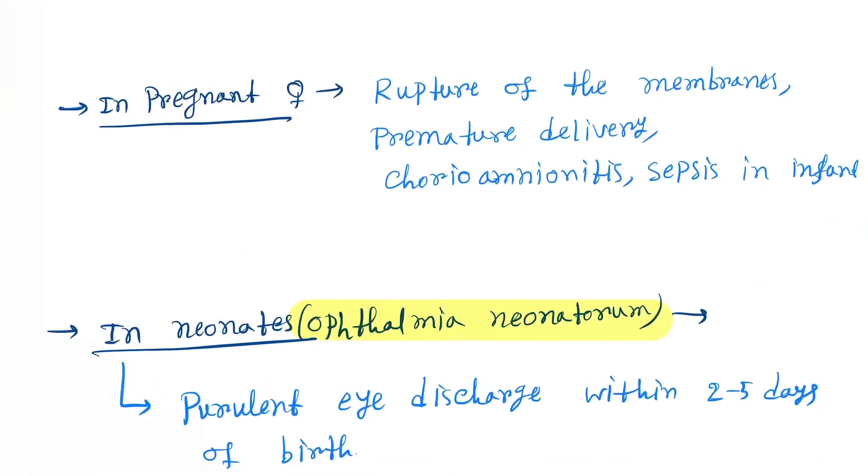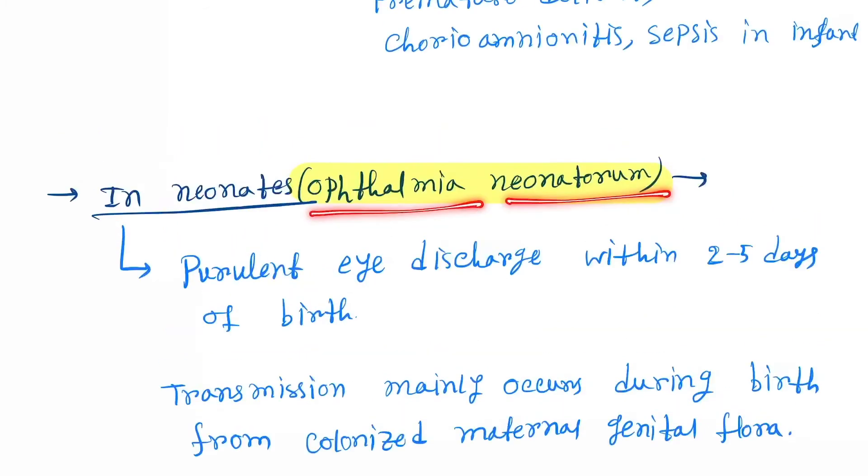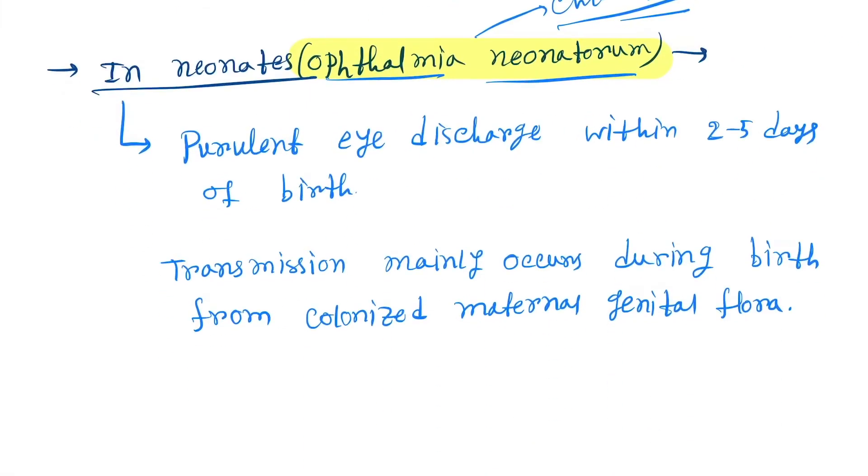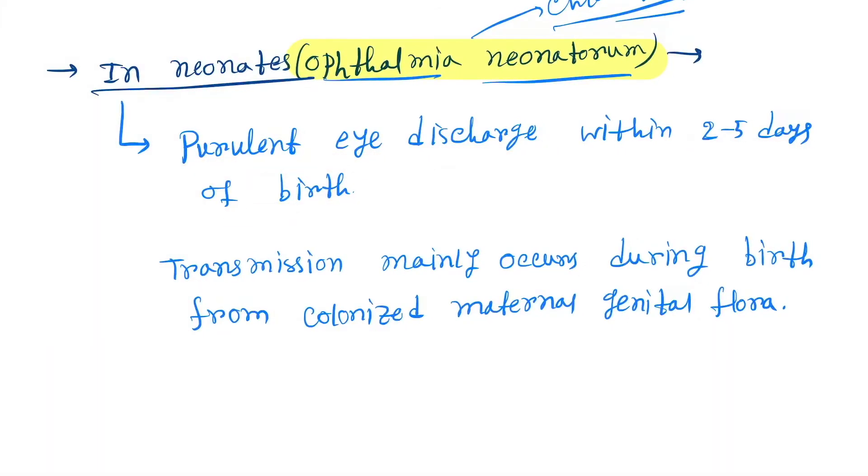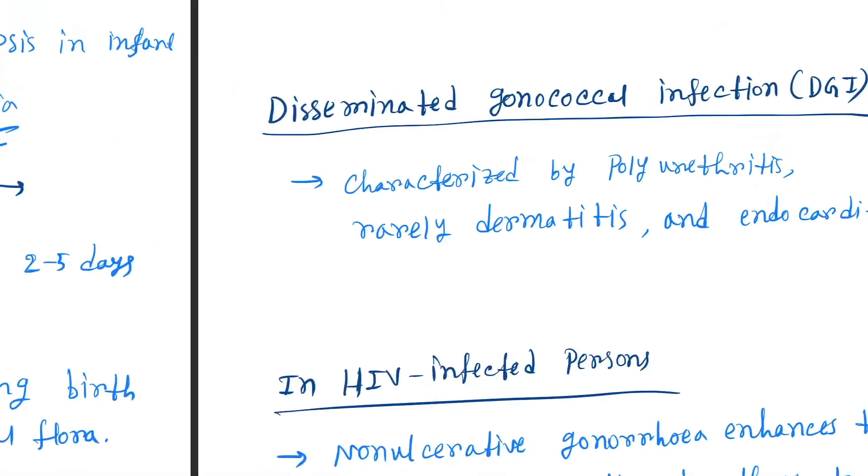In pregnant females, it can cause rupture of membranes which leads to premature delivery, chorioamnionitis, sepsis. In infants and neonates, ophthalmia neonatorum. It is also caused by Chlamydia, remember this important point. Clinical features will be purulent eye discharge within two to five days of birth. Transmission mainly occurs during birth from colonized maternal genital flora.